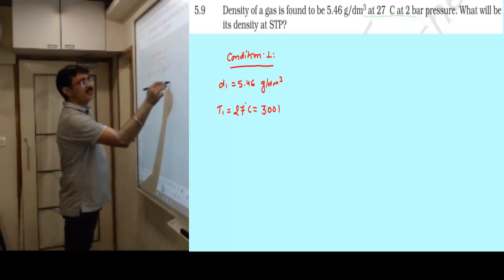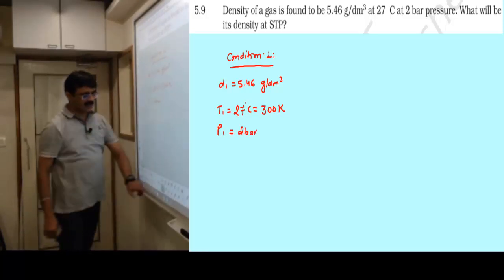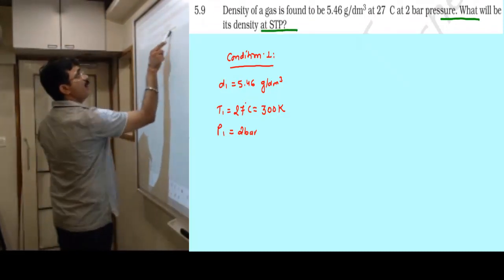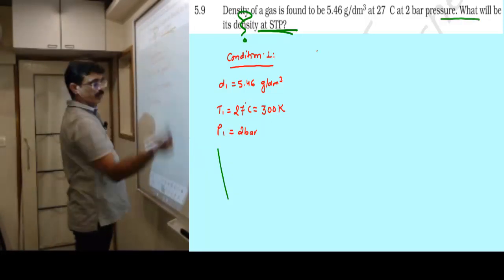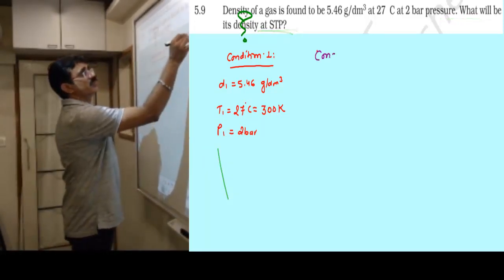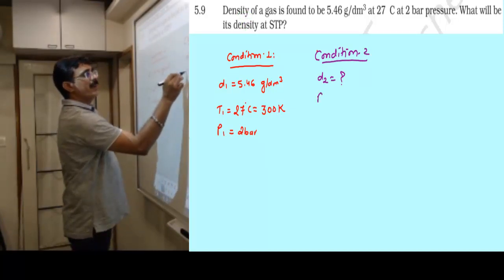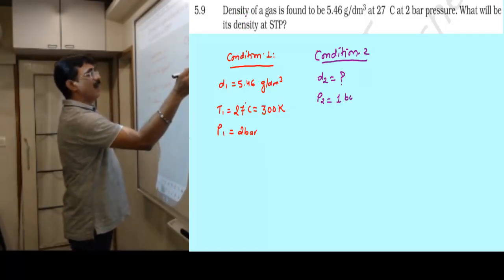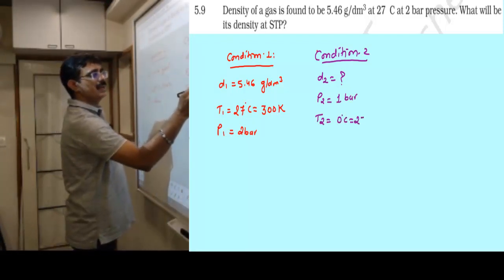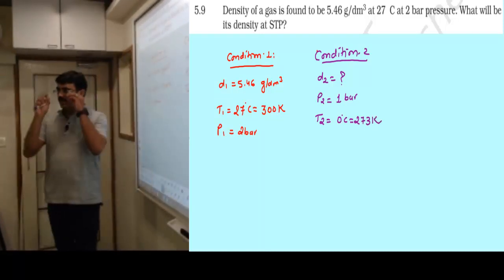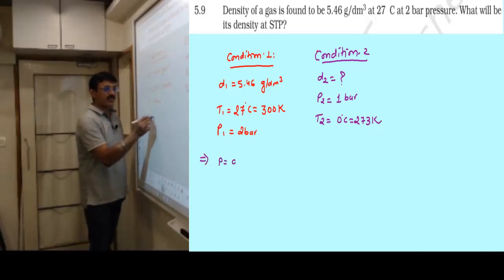Density is 5.46 gram per decimeter cube when temperature is 27 degrees Celsius and pressure is 2 bar. Temperature T1 equals 300 Kelvin, pressure is 2 bar. If we change conditions and bring it to STP, what should be its density? That means find D2 when pressure is STP, which means temperature is 0 degree Celsius, equals 273 Kelvin, and pressure is 1 bar.